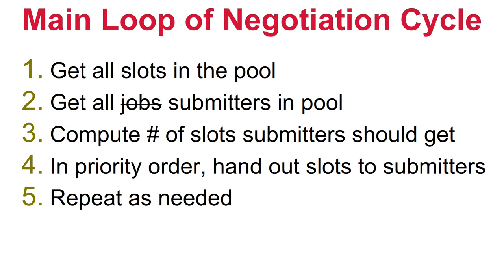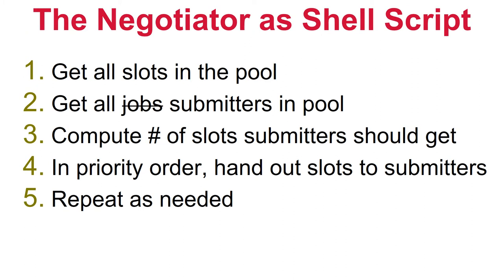Now let's look at how the negotiator decides to assign slots to submitters. The main loop of the negotiation cycle has four steps repeated every cycle: first, get all slots in the pool; then get all submitters; then compute the number of slots each submitter should get; then hand out matched slots to submitters in priority order. For debugging priority decisions or to understand the negotiator better, HTCondor provides primitives to do each of these sub-steps independently.